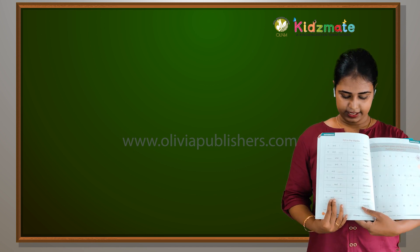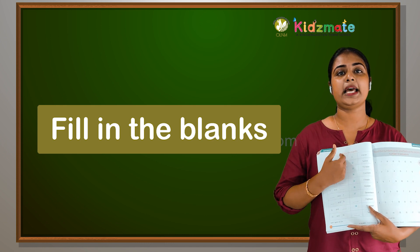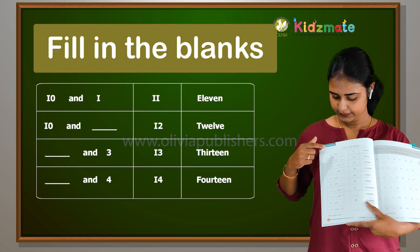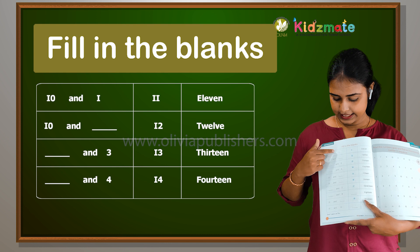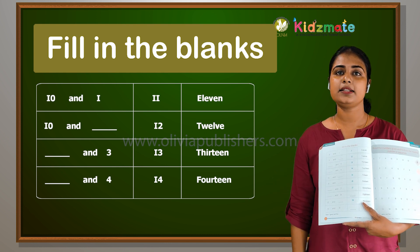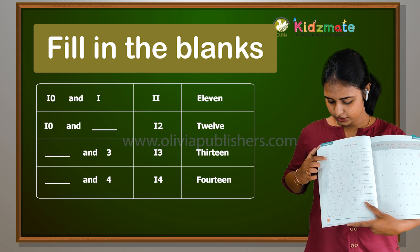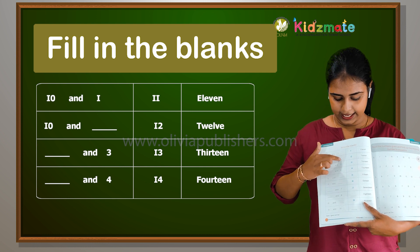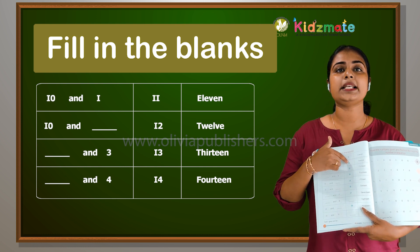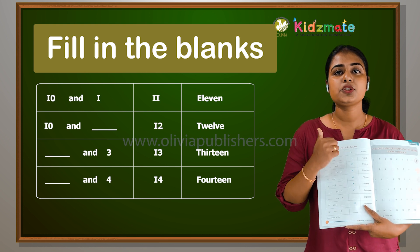Alright, we are going to do an activity. You have to fill in the blanks. Ten and one is eleven — that's given. Now, ten and dash equals twelve. Ten and dash equals twelve.